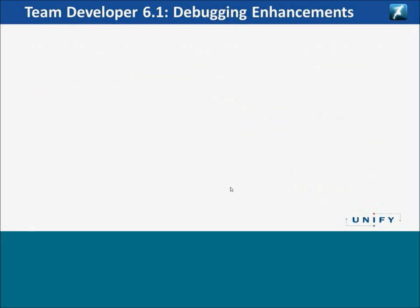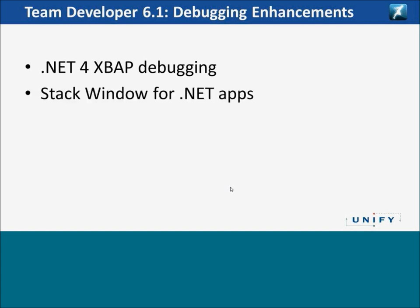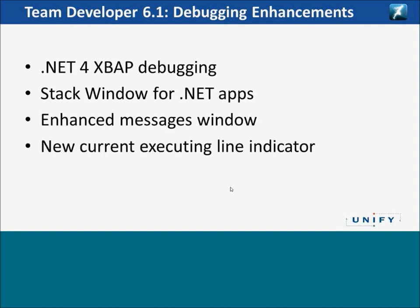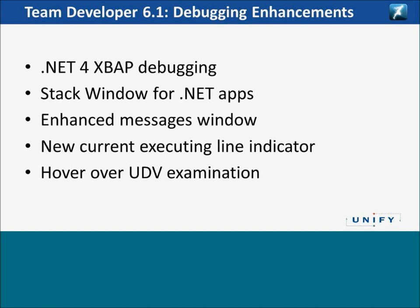A few more things related to the IDE: debugging enhancements. .NET 4 XBAP debugging — before, we couldn't debug XBAP browser-based WPF applications on .NET 4 because Microsoft changed the debugger library massively from .NET 3.5 to .NET 4, and we have now adopted for that change. We now have a stack window for .NET apps so you can see what functions your application is going through when debugging. An enhanced messages window gives more information about what's going on. A new current executing line indicator works nicely with the new color-coded source code. And we now have hover-over UDV examination — during debugging, you move the mouse over a UDV and see its values displayed.